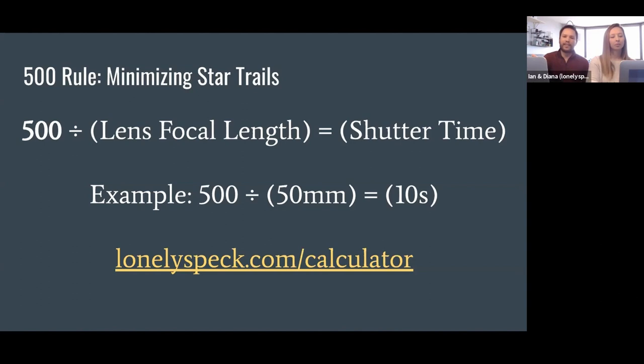So the way that it works is fairly simple. Sorry for the math, but it's basically you take the number 500 and you divide that by your lens's focal length, and that will give you a recommended shutter time. So for example, if we were shooting on a 50 millimeter, we just take 500 divided by 50 millimeters. And so 500 divided by 50 is 10. And so a recommended shutter time for a 50 millimeter is about 10 seconds.